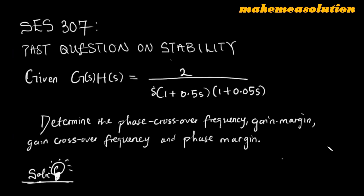Hello guys and welcome to another video on control systems. We'll be looking at this past question where we are given G(s)H(s) equal to 2 over s into 1 plus 0.5s and 1 plus 0.05s.